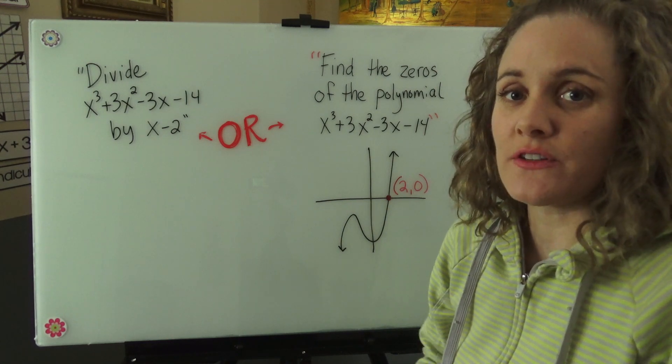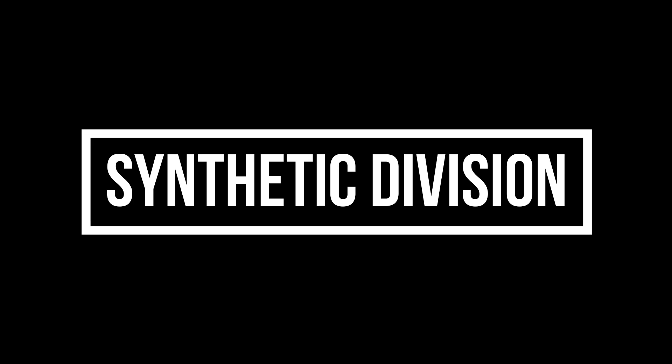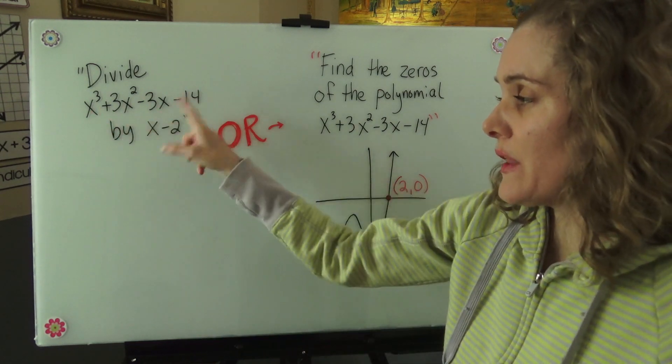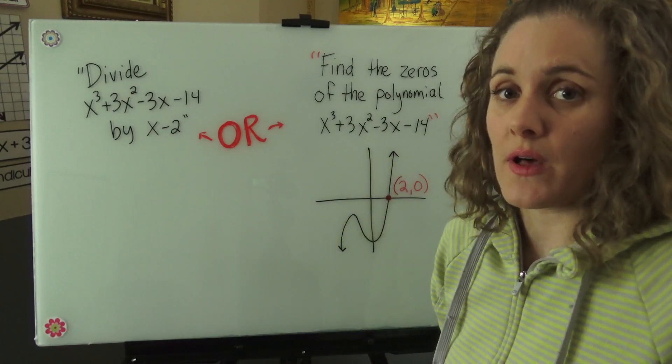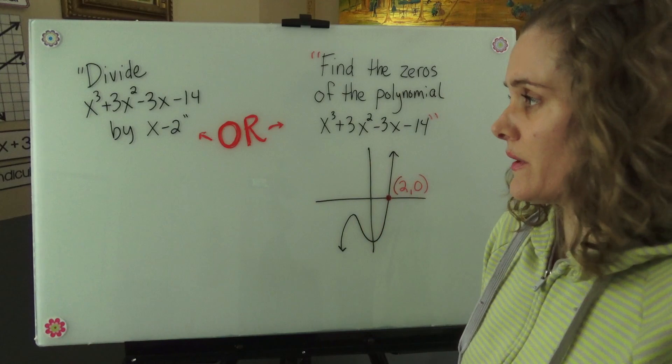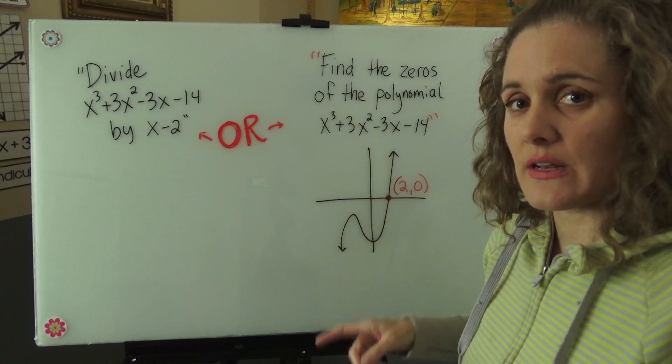Today we're going to be using synthetic division to find the zeros of a polynomial. There's two ways that this question could be asked. One is divide this polynomial by one of the zeros of the polynomial. Another way you might be asked is to find the zeros of a polynomial. So we're going to go with this way of asking that question today.